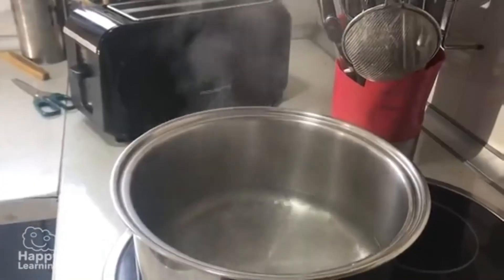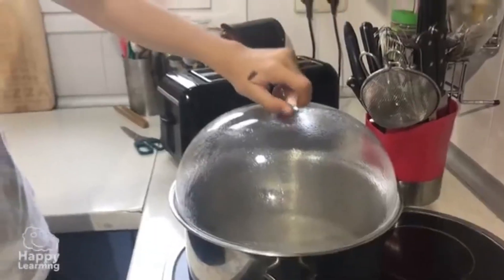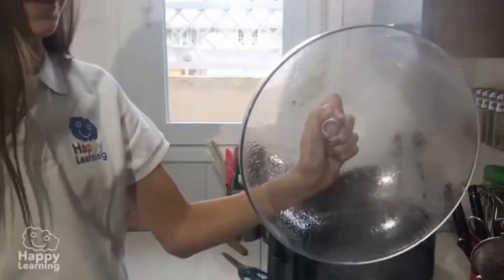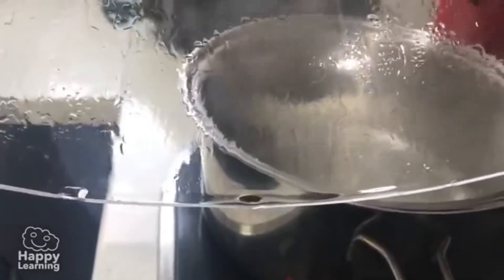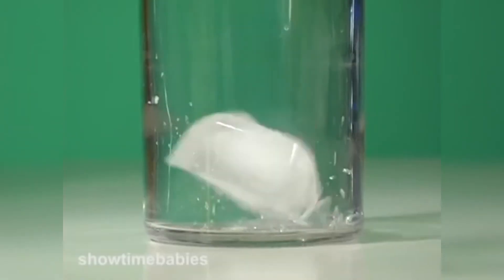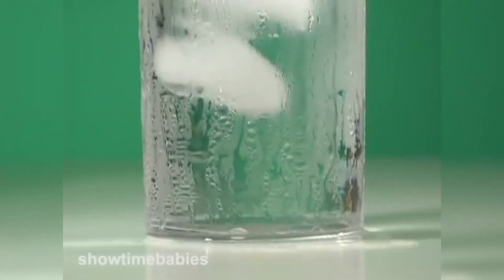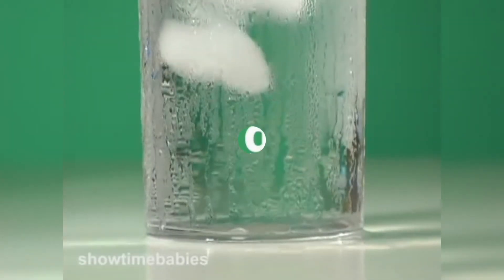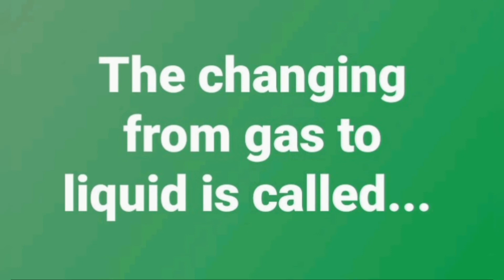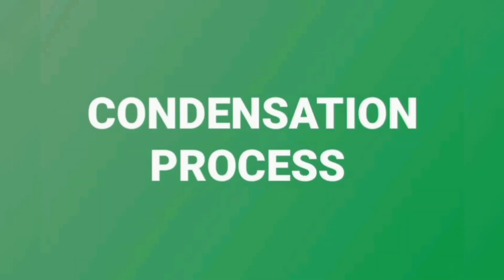Changing from gas to liquid — water vapor to water. When hot water vapor touches the lid of a cooking pot, it loses heat and changes to water droplets. When water vapor from the surrounding touches the outer surface of a glass, it loses heat and changes to water droplets. The change from gas to liquid is called the condensation process.